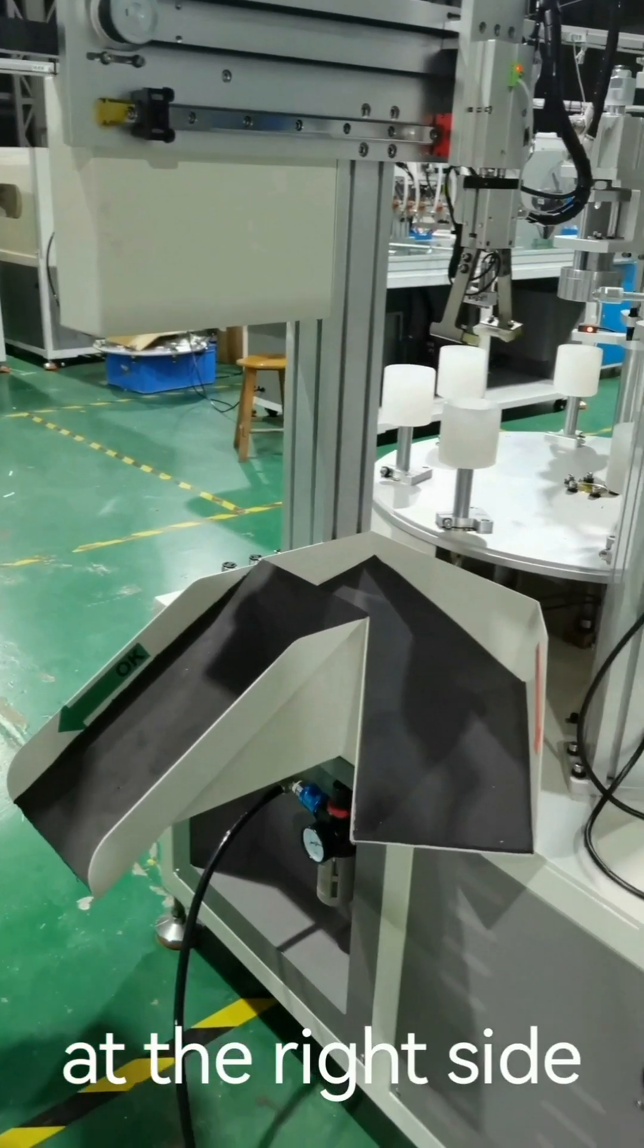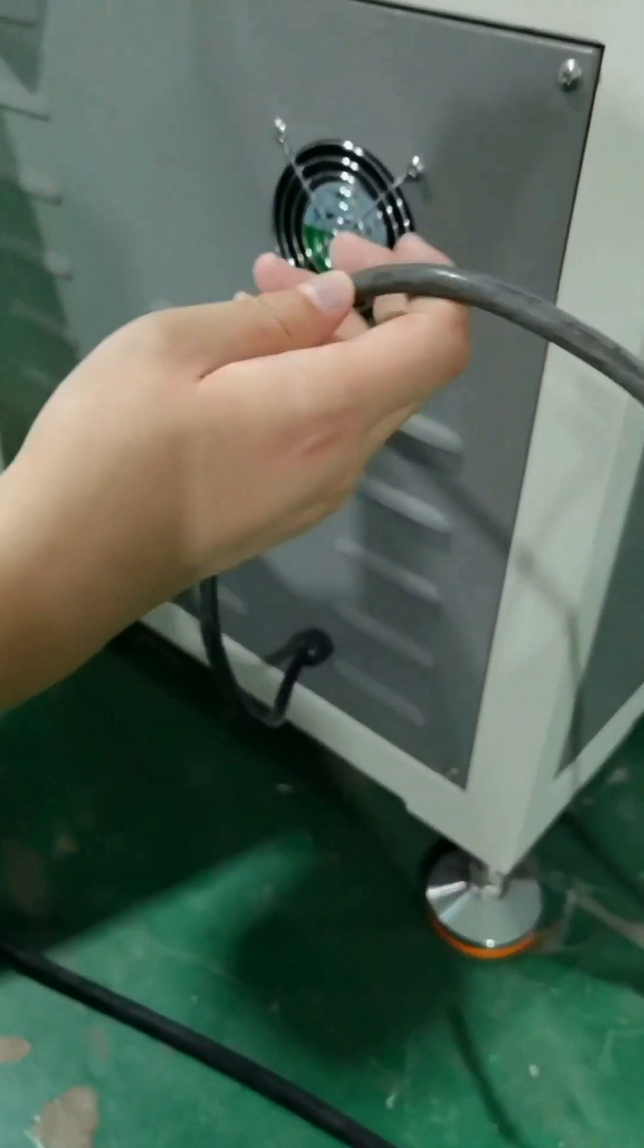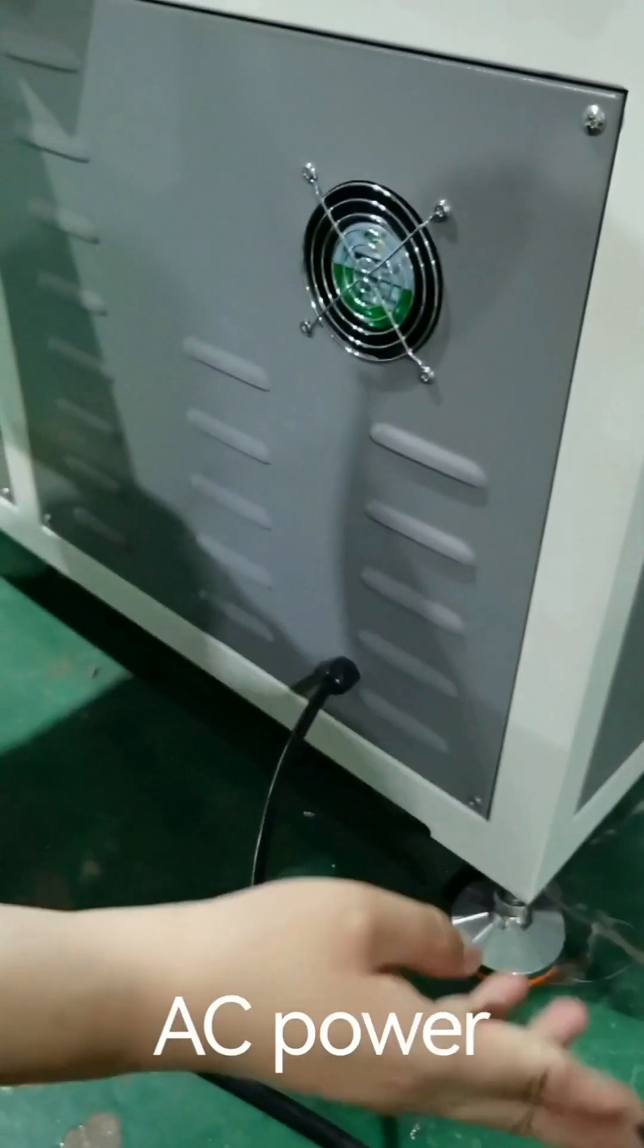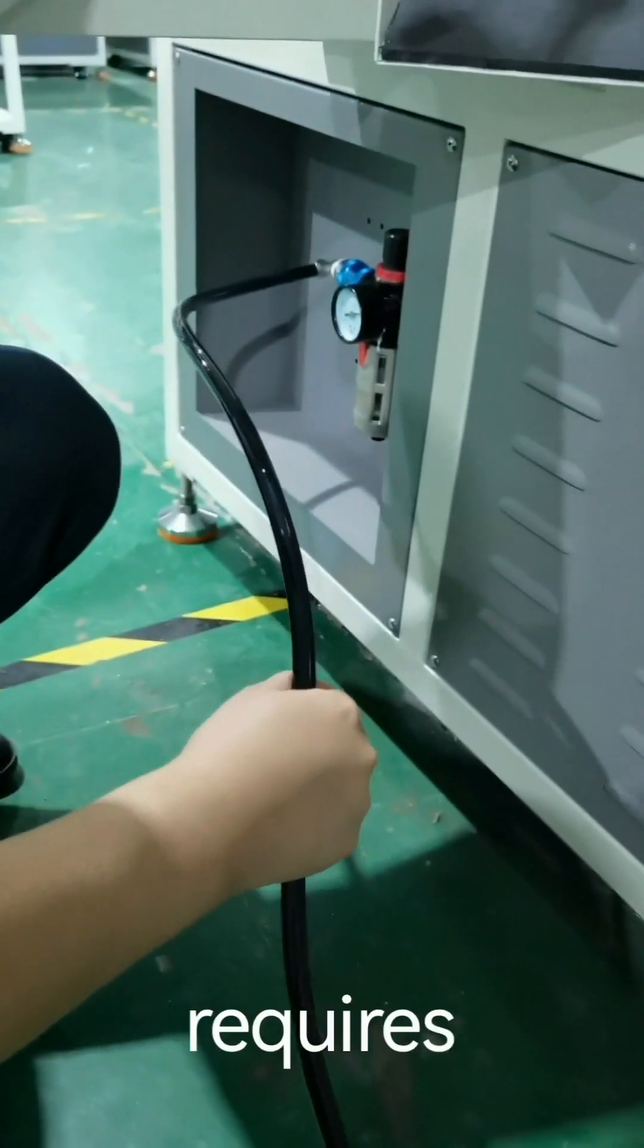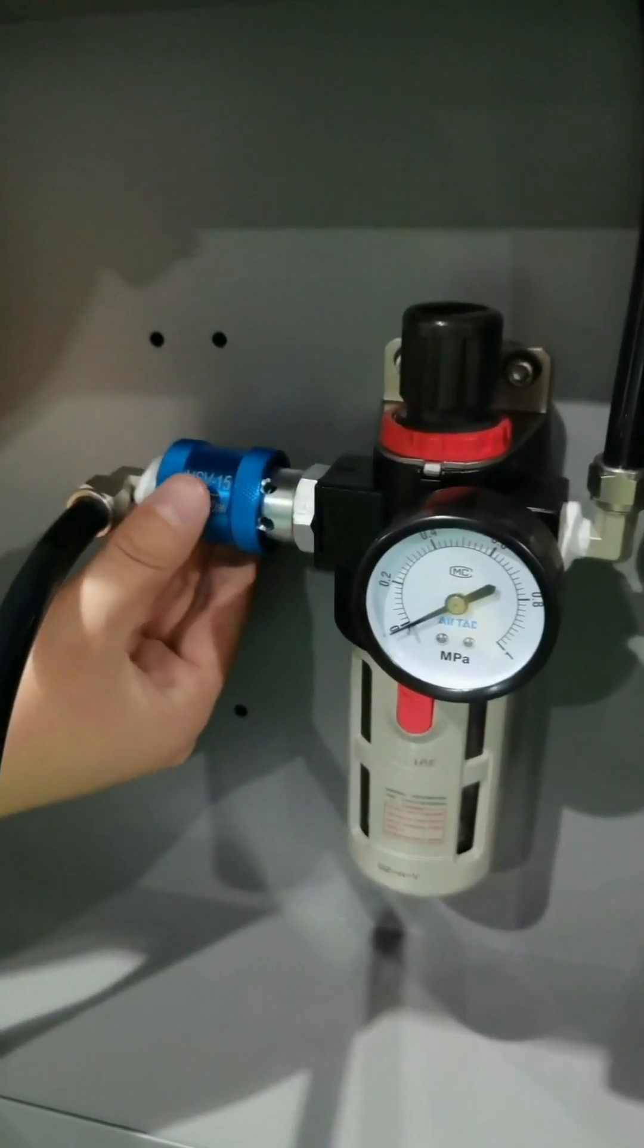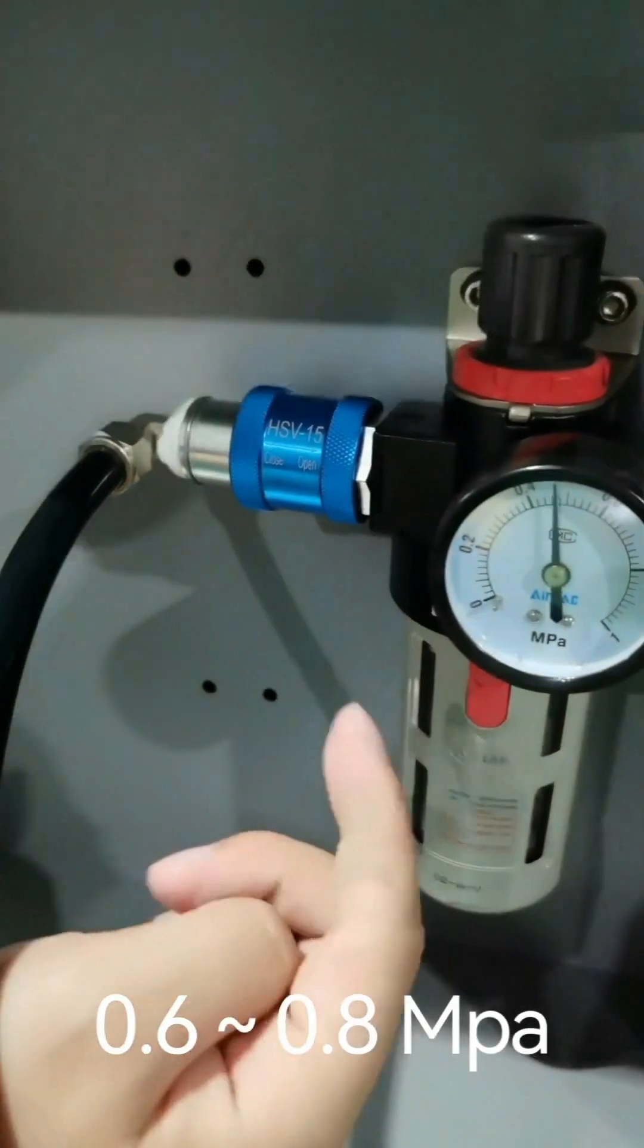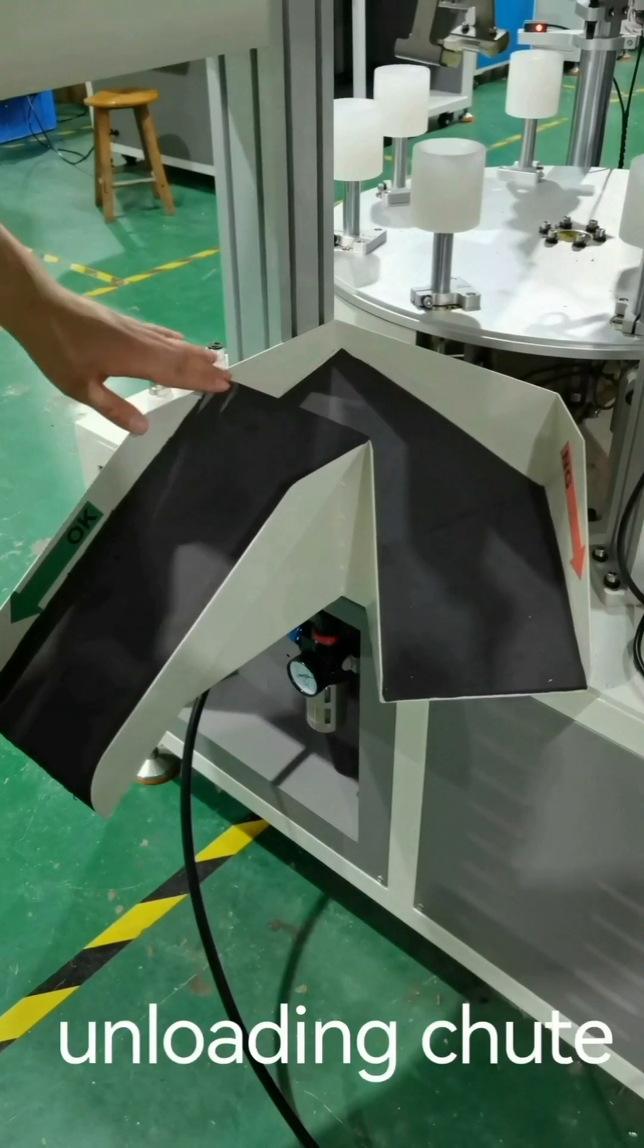Let's take a look at the right side of the machine. Here you can see the power cable. This machine operates using single-phase AC power. Here is the air tube. The machine requires compressed air, and the air pressure should be between 0.6 and 0.8 MPa. Here is the unloading chute.